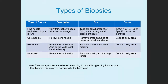A core needle biopsy uses a hollow core needle to remove small samples of tissue in a cylindrical shape. These are coded to the body area involved, so each body area will have different codes for core needle biopsies. An excisional biopsy uses a percutaneous through-the-skin excision, also called a wide local incisional biopsy, to remove an entire tumor with some of the margins. This is also coded to the specific body area.